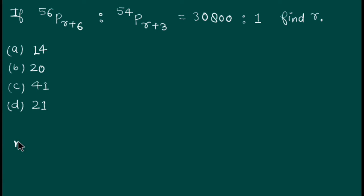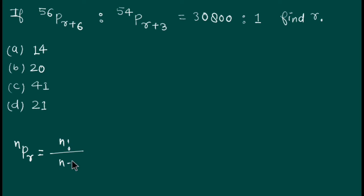First, nPr is the expression for permutation. This expression denotes the arrangement of n objects taking r at a time, called permutation and denoted by nPr. The value of nPr is n factorial divided by (n minus r) factorial. So we apply this formula to our question.